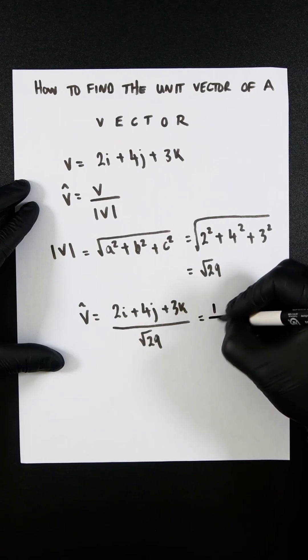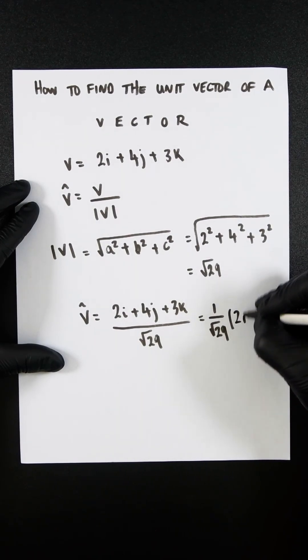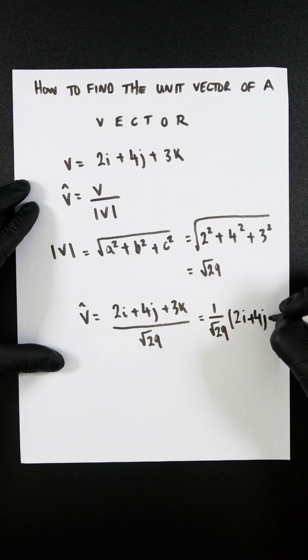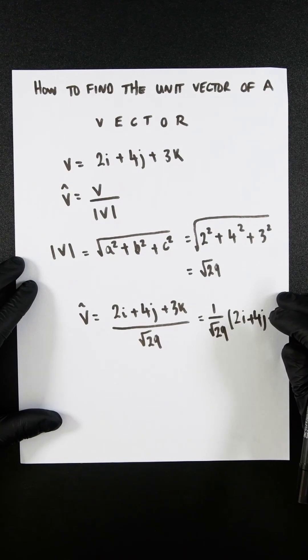This can also be represented as 1 over root 29, 2i plus 4j plus 3k. Either one is fine. It's just how you like to see it left at the end.